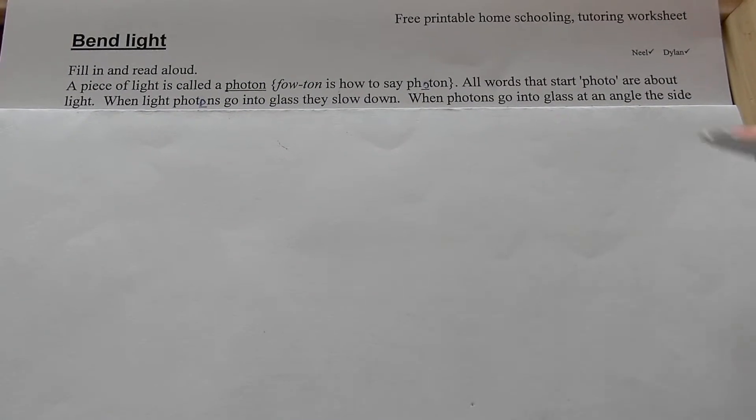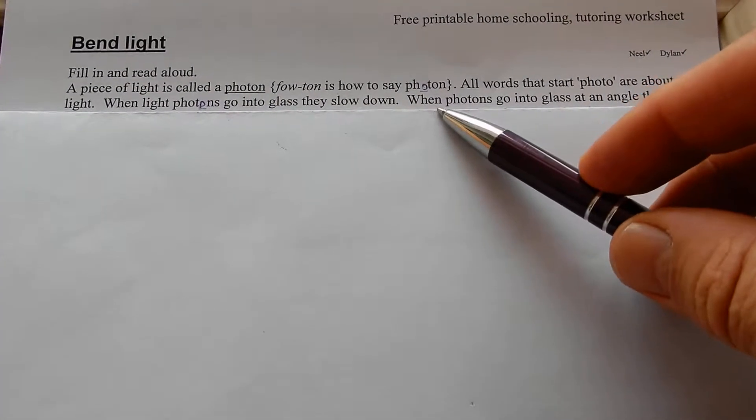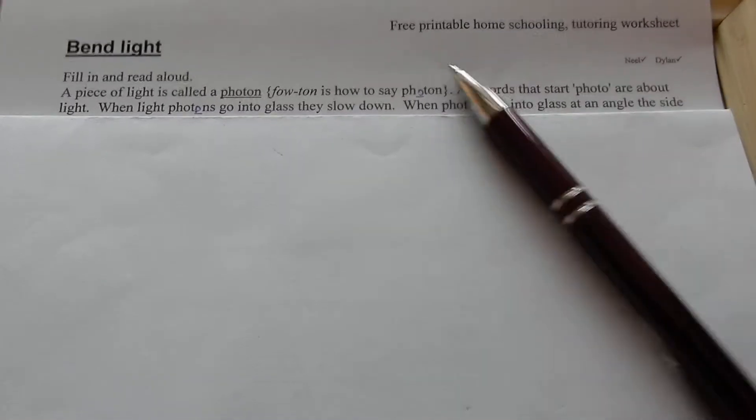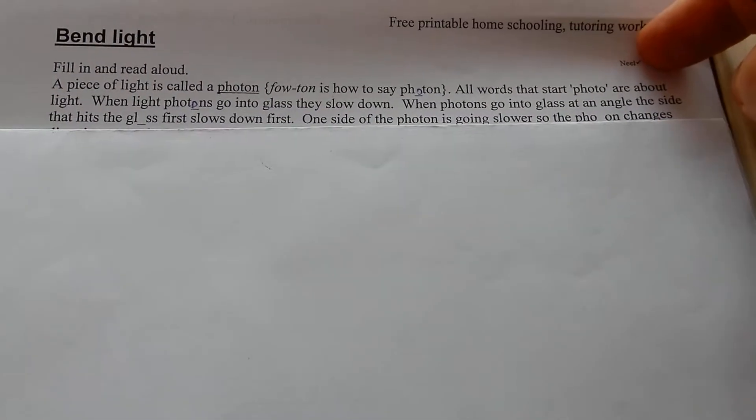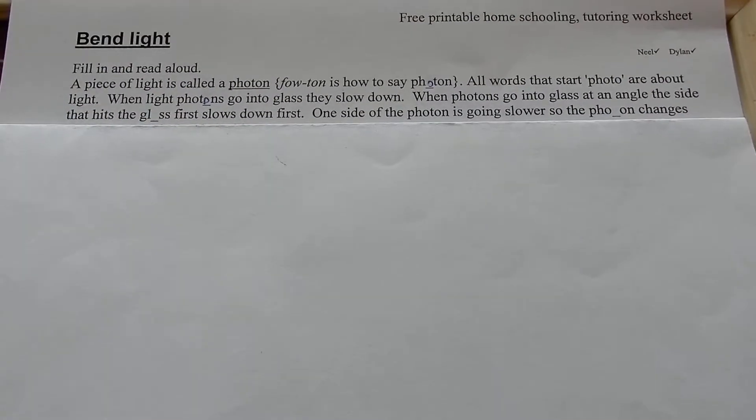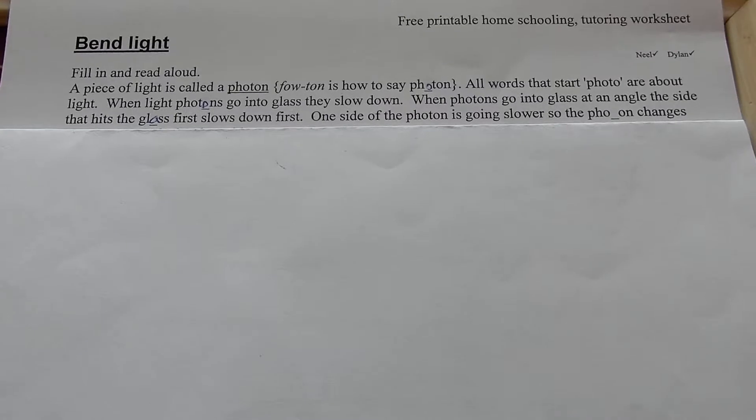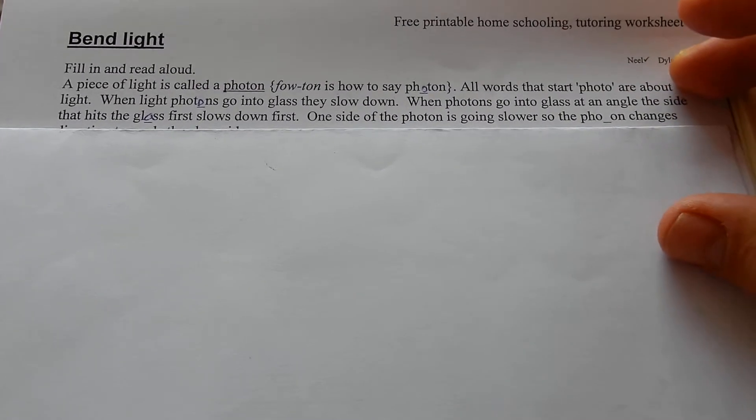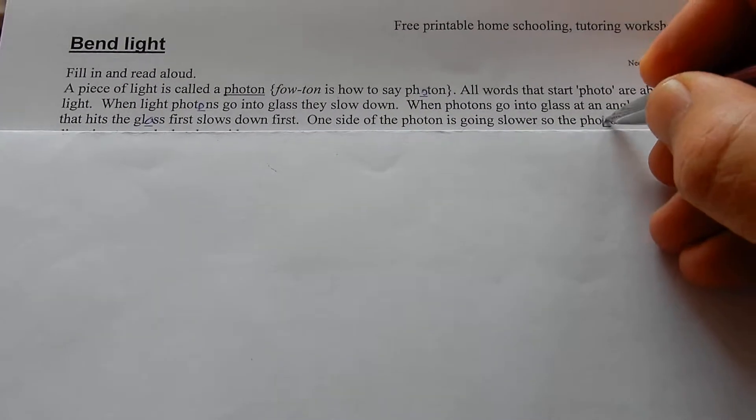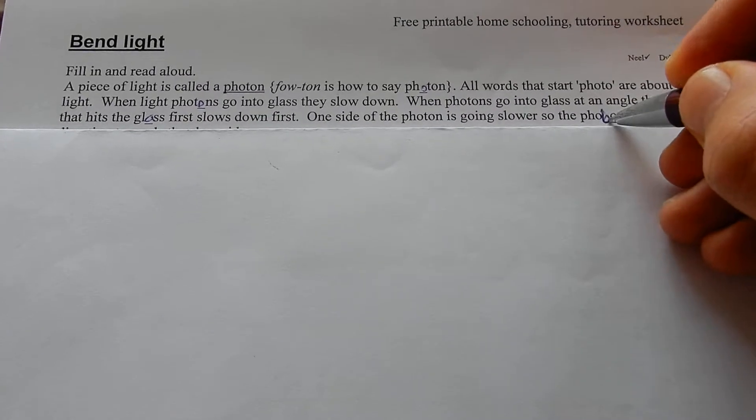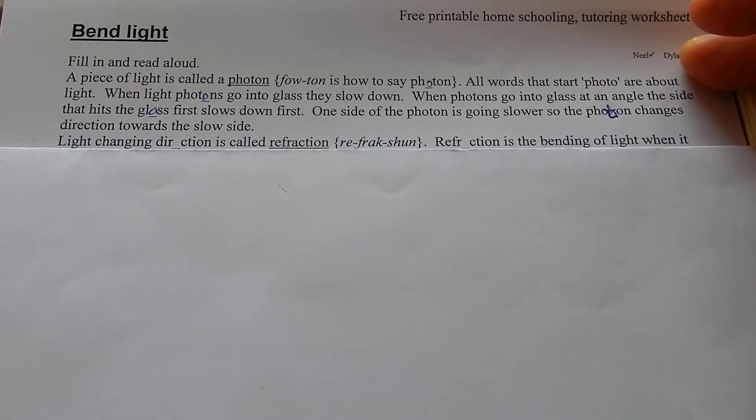Air is about the same as a vacuum between planets. When photons go into glass at an angle the side that hits the glass first slows down first.